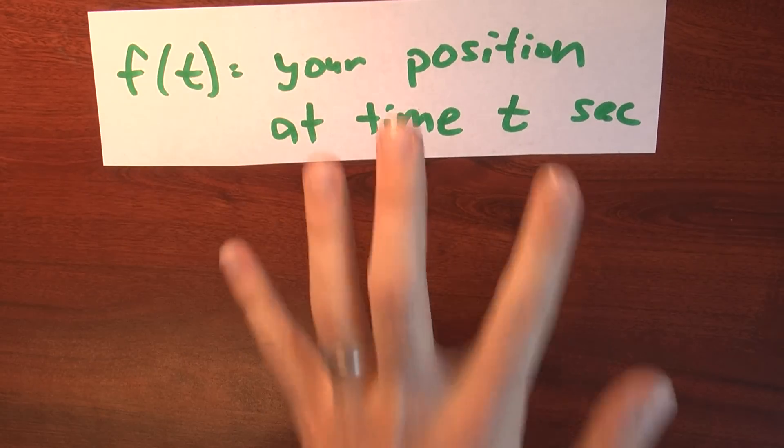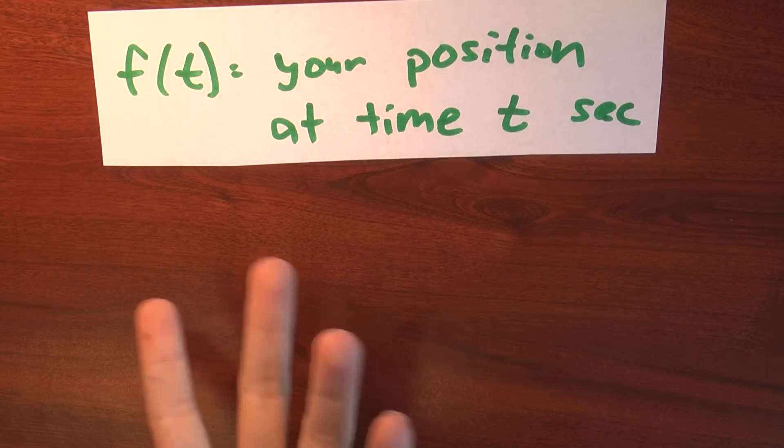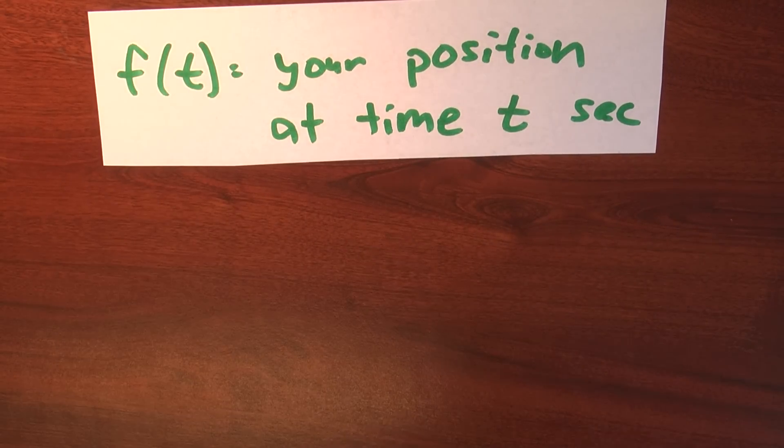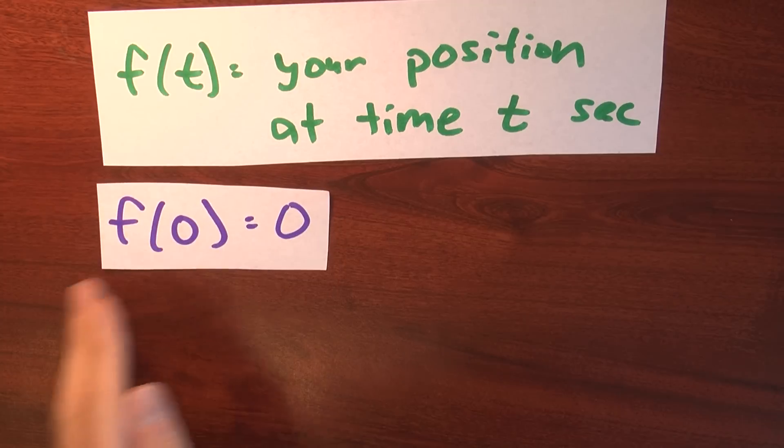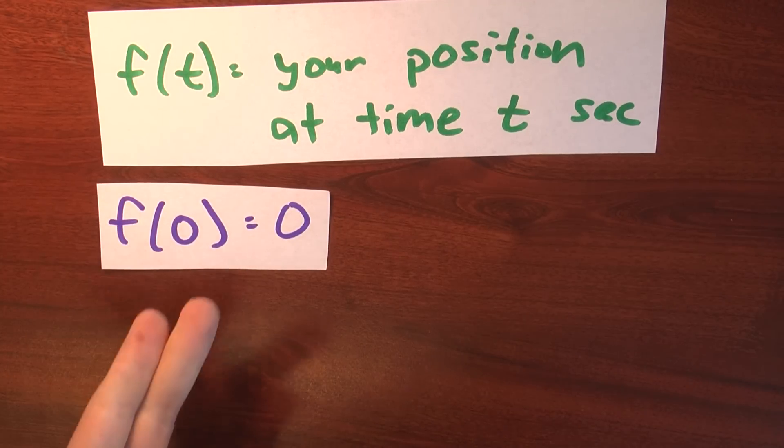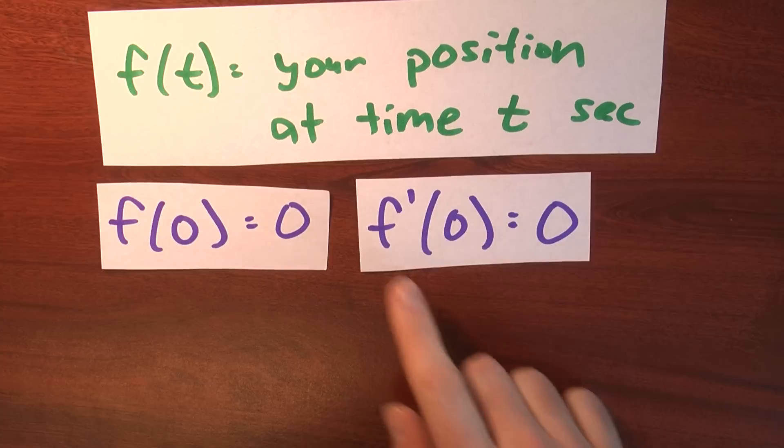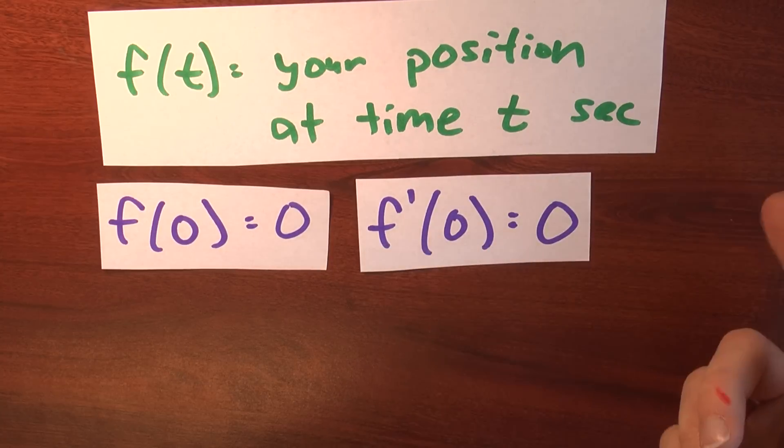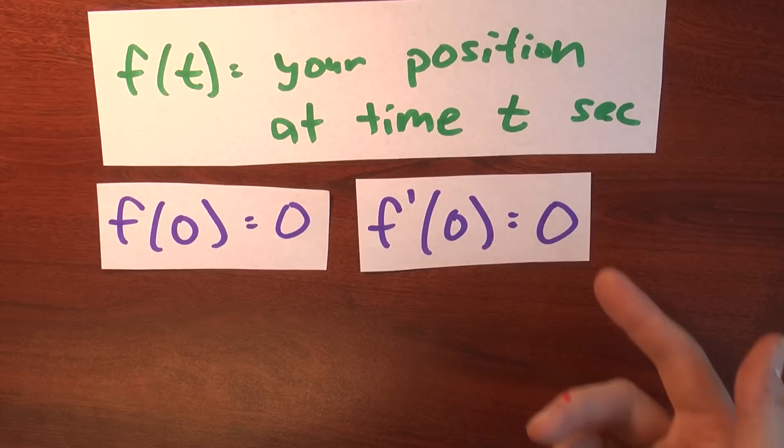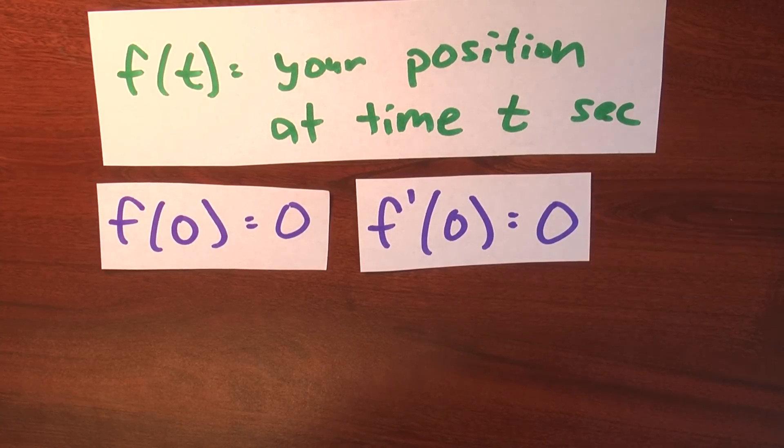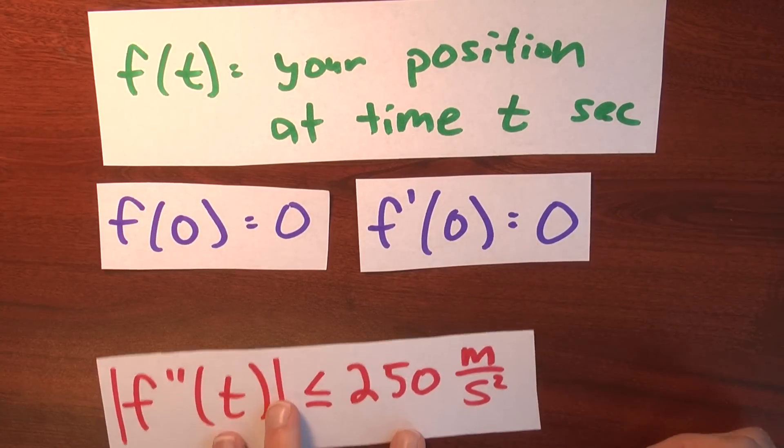Let's imagine the following scenario. Well, let's let f of t be your position at time t seconds, after the beginning of the experiment. And when the experiment begins with f of 0, where are you? f of 0 is 0, so you're at the origin. And you're not moving. Your velocity at time 0 is 0, so the derivative of your position at time 0 is 0.